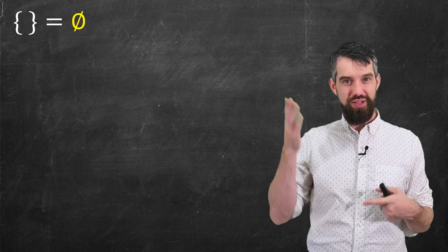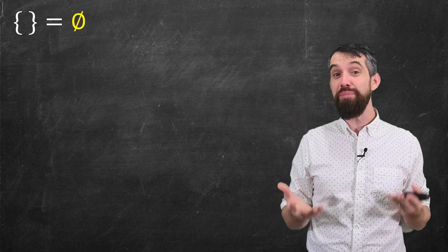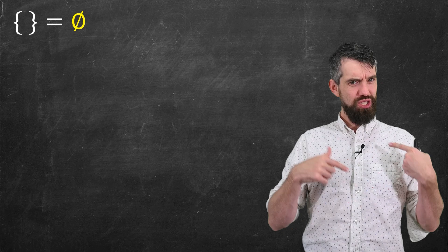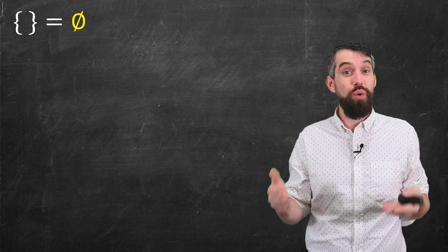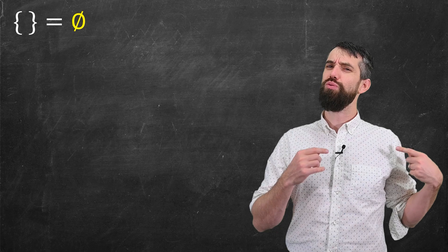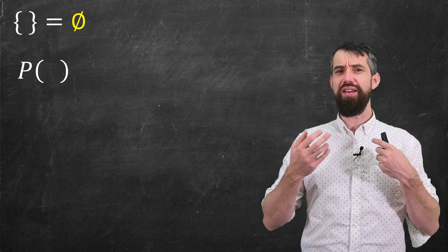So my notation, again, is this sort of zero with a slash down it, but I just think of this as an empty box. And since squiggly brackets denote sets, I could use the notation two squiggly brackets just the same. Okay, so what is the power set, then, of the empty set?